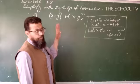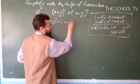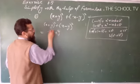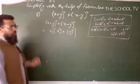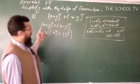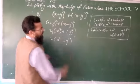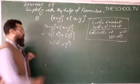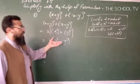Now applying this to our question: (first + second)² + (first − second)² = 2 into (first² + second²). So (x + y)² + (x - y)² = 2(x² + y²). This is the simplified form with the help of the formula.